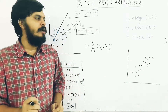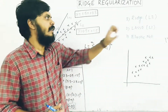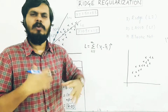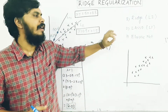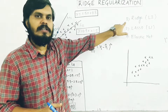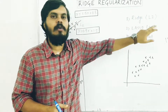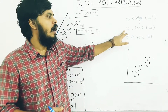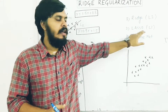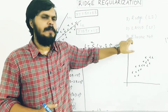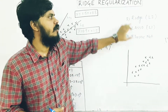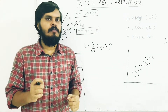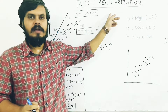There are three kinds of regularization techniques. The first is ridge regularization, also called L2 regularization. The second is lasso, also called L1 regularization. And the third is elastic net, which is basically a combination of ridge plus lasso. In this video we are going to focus on ridge regularization.